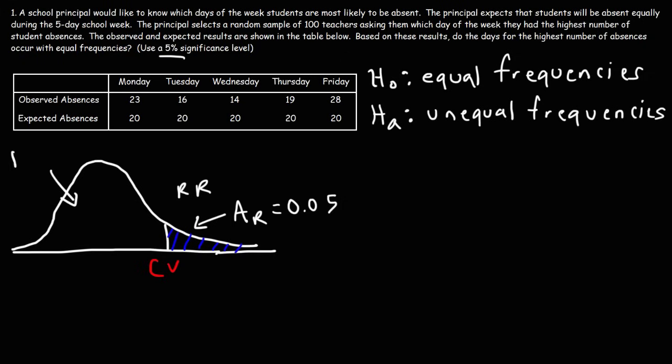The non-shaded region is the do-not-reject region. So what we're going to do is we're going to get our calculated chi-square value, compare it to our critical chi-square value, and see if the calculated value lies in the do-not-reject region or in the rejection region. If it lies in the rejection region, we're going to reject the null hypothesis.